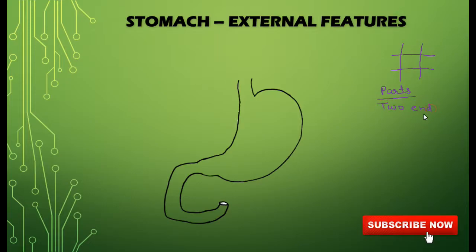It has two ends. The upper end is the cardiac end, where the esophagus will meet with the stomach. The lower end is known as the pyloric end. And it has two curvatures. This big curvature is the greater curvature.